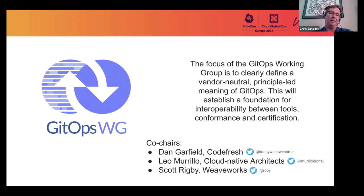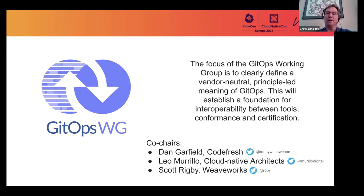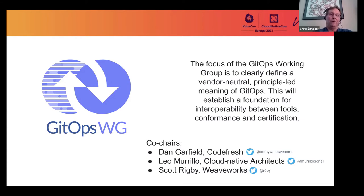The focus of the GitOps Working Group is to clearly define a vendor-neutral and principle-led meaning of GitOps — a very open process and open tooling system. The working group will help define and establish a foundation for interoperability between tooling from various vendors, conformance of systems with GitOps, and certification of practitioners of GitOps as well. We've met several times over the past several months, and out of that, several co-chairs were elected: Dan Garfield of Codefresh, Leo Murillo of Cloud Native Architects, and Scott Rigby of Weaveworks.